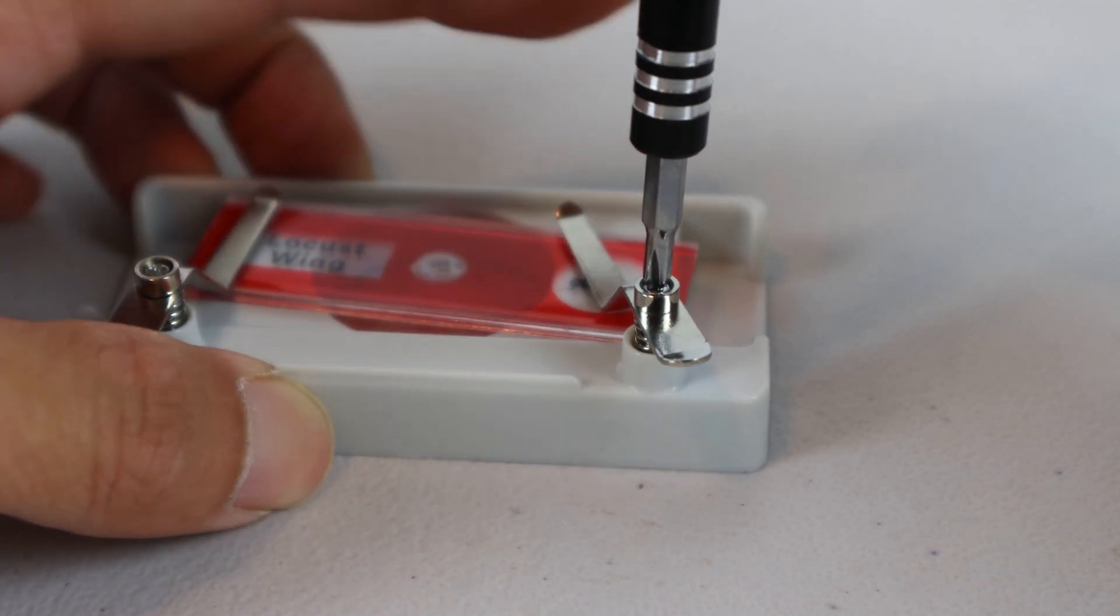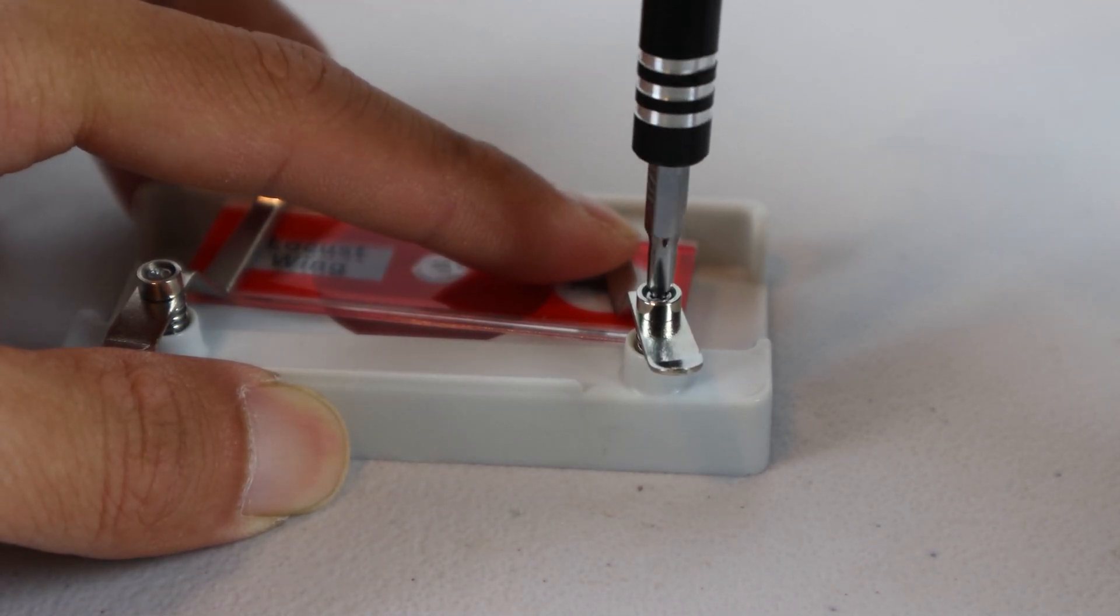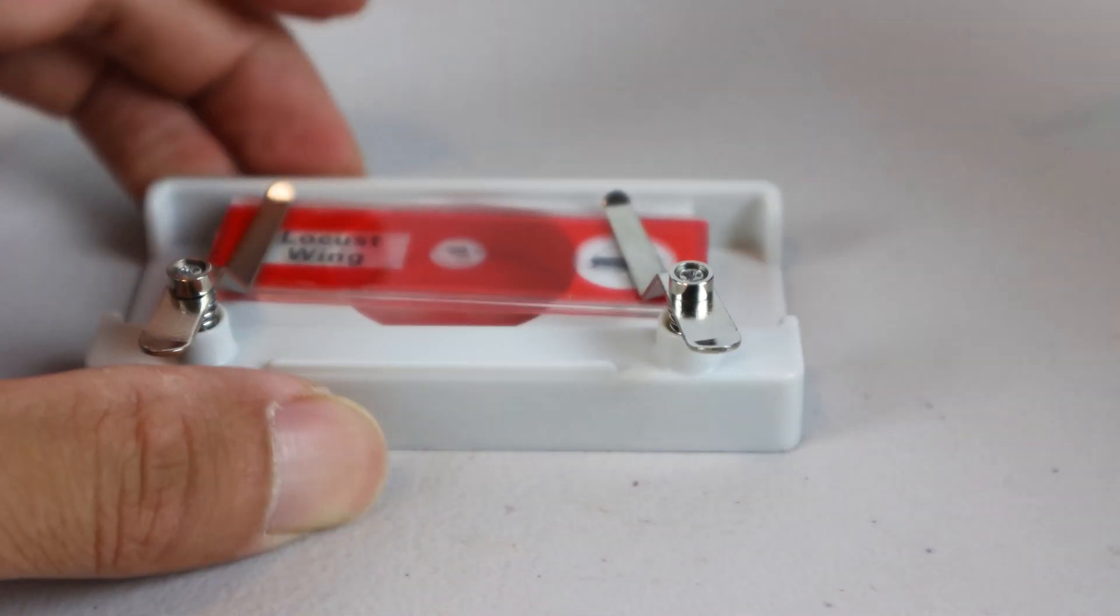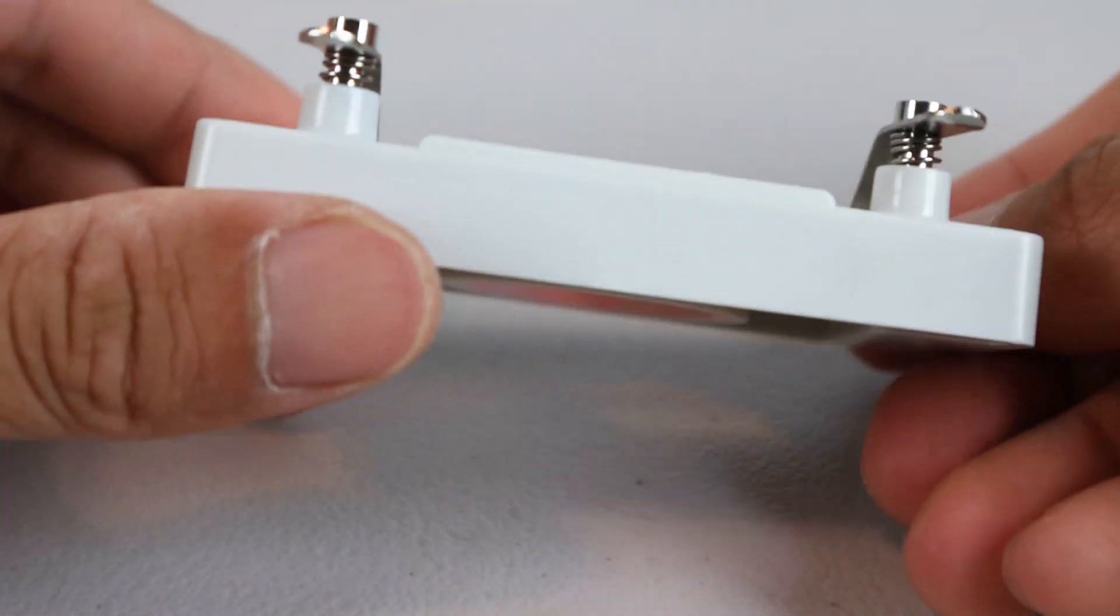So what we'll do is grab a small screwdriver and tighten the screws at the springs to lower them a bit and provide more tension. Now the clips firmly clamp the slide and it doesn't move around easily or fall off the block.